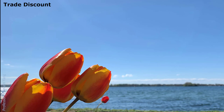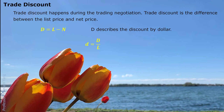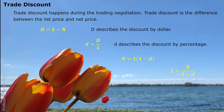Next part: trade discount. It happens during the trading negotiation. The trade discount is the difference between the list price and net price. We use capital D to describe the discount by dollar amount, or we can use lowercase d to describe the discount by percentage of the list price. We can understand the relationship in a clear mathematical expression.